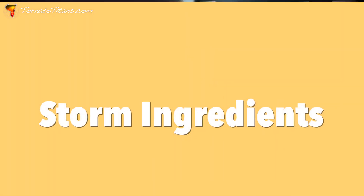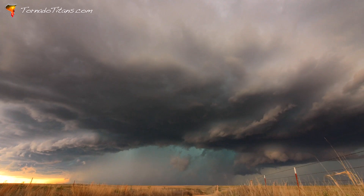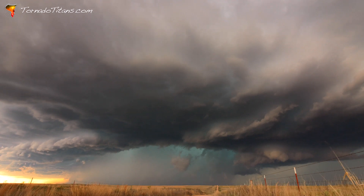At the very heart, there are three ingredients you're looking for to get storms. You're looking for moisture, instability, and lift. This seems very simple, but it's very true — to just get a thunderstorm, you need all three things. Let's dive in right now and look at all three and how they contribute to storms.